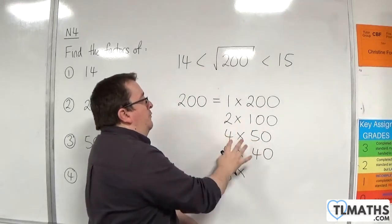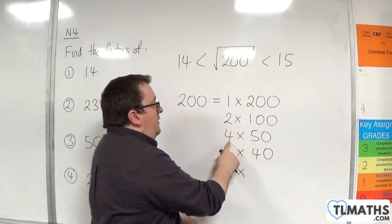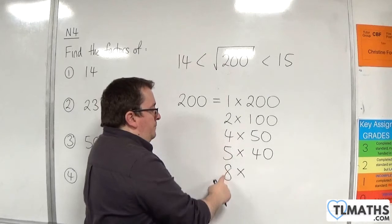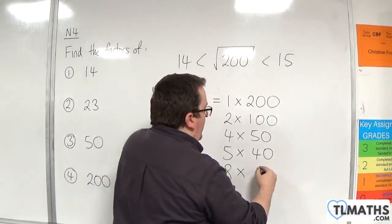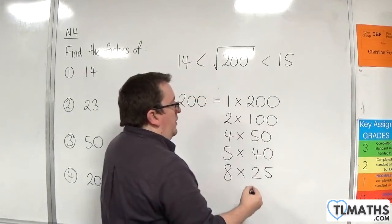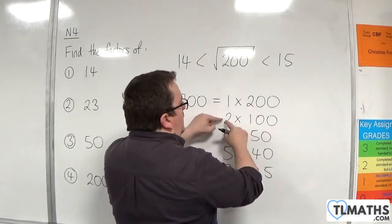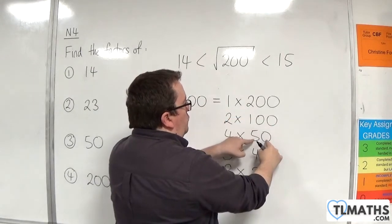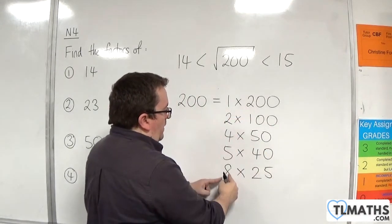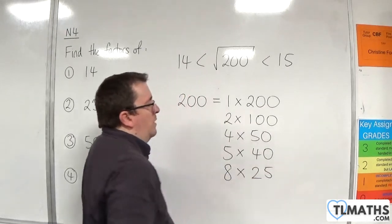The reason why I know 8 goes into it is because 2 times 100 went in, and 4 times 50. So, we had 2 times 100, 4 times 50. And, because I'm doubling that one, I can halve that one. So, 8 goes in 25 times. You can see each time, I'm doubling the one on the left, and halving the one on the right.